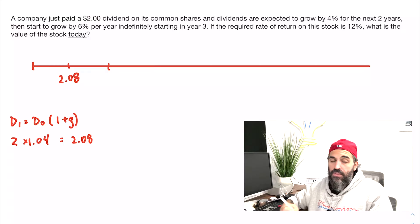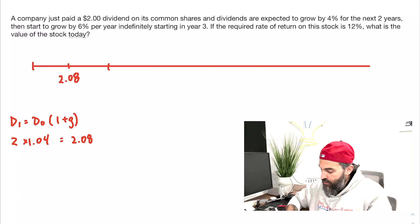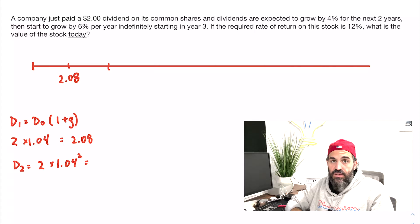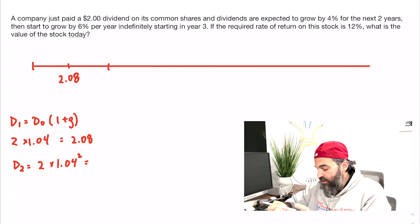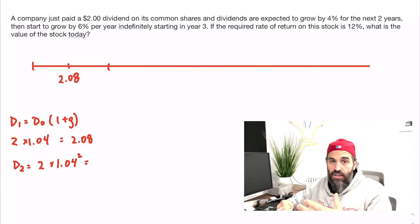In the second year it'll also grow by 4%, so if I want to find D2, I could just square my 1.04. So 2 times 1.04 squared—that'll tell me what my dividend is in the second year. Students often have a hard time identifying what the future dividend is.